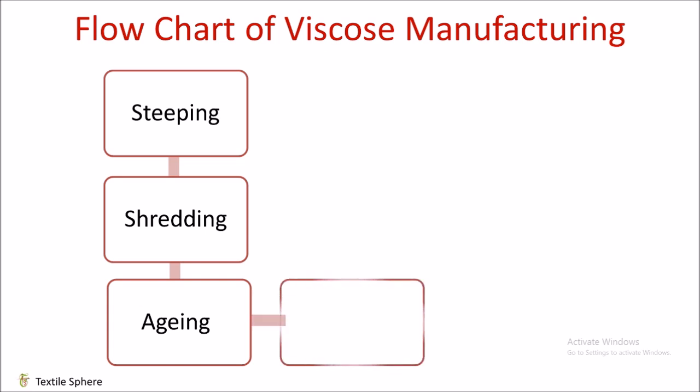Next is Xanthation, which is one of the most important processes in viscose rayon manufacturing. During xanthation, the aged alkali cellulose crumbs are placed in vats and allowed to react with carbon disulfide under controlled temperature at 20 to 30 degrees Celsius, which forms cellulose xanthate.